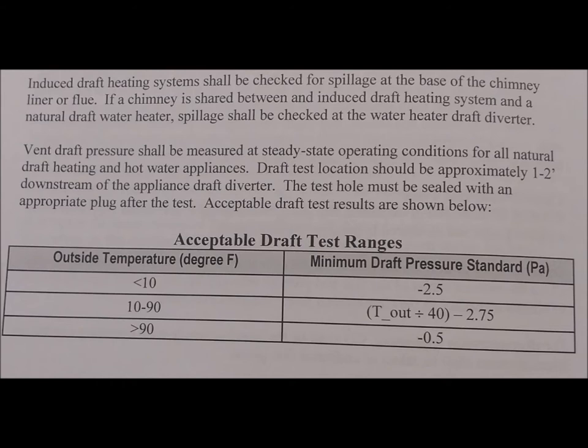Induced draft heating systems shall be checked for spillage at the base of the chimney, liner, or flue. If a chimney is shared between an induced draft heating system and a natural draft water heater, spillage shall be checked at the water heater draft diverter. Vent draft pressure shall be measured at steady state operating conditions for all natural draft heating and hot water appliances. The draft test location should be approximately 1 to 2 feet downstream of the appliance draft diverter. The test hole must be sealed with the appropriate plug after the test.